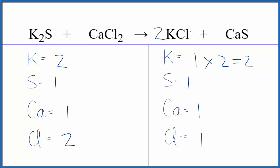The two though, it applies to the whole compound here. So we have one times two for the chlorine as well, that gives us two chlorine atoms, those are the same. Everything else is balanced, we're done. This is the balanced equation for potassium sulfide plus calcium chloride.